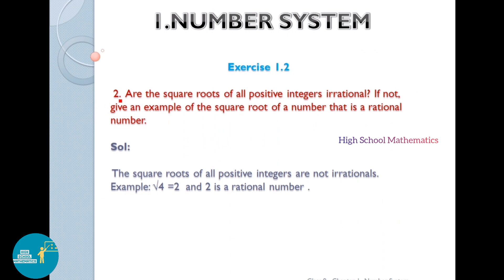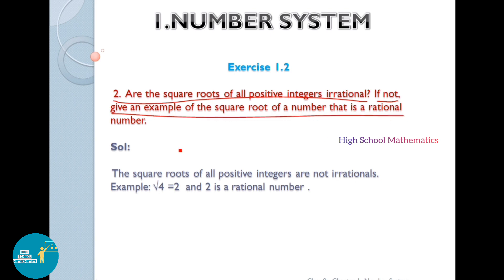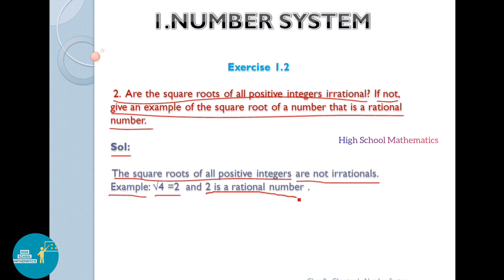Question number two: are the square roots of all positive integers irrational? If not, give an example of the square root of a number that is a rational number. The square roots of all positive integers are not irrational. For example, square root of 4 is 2, and 2 is a rational number. Therefore, we can say the square roots of all positive integers are not irrational.